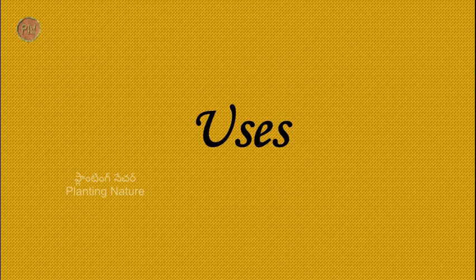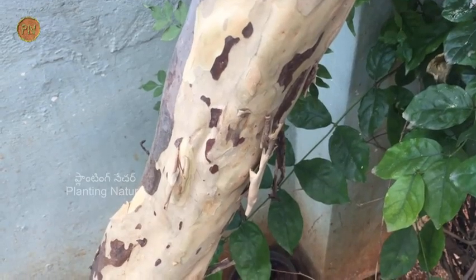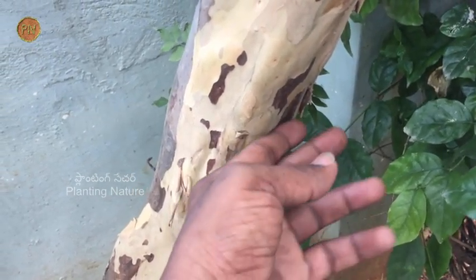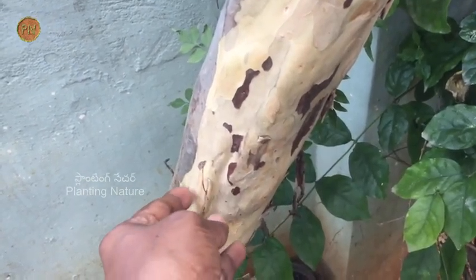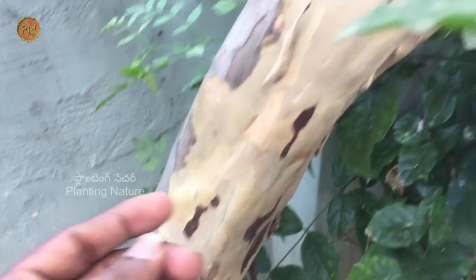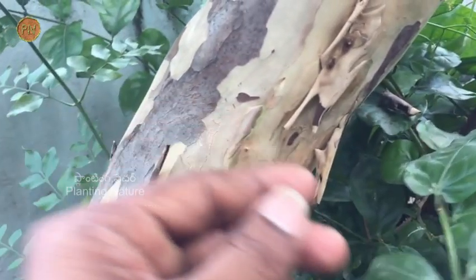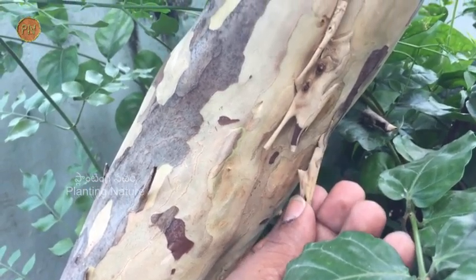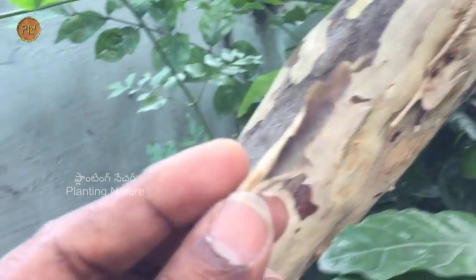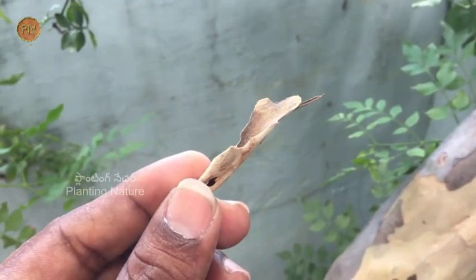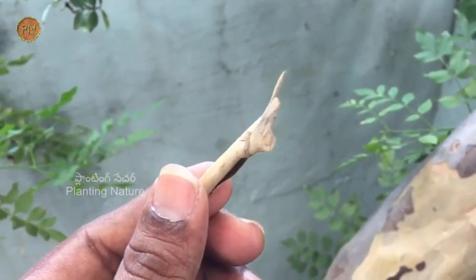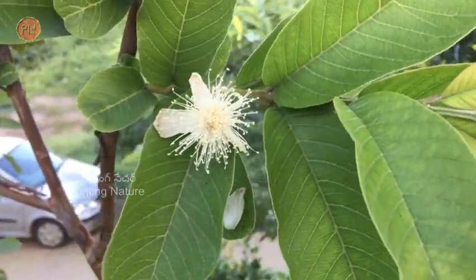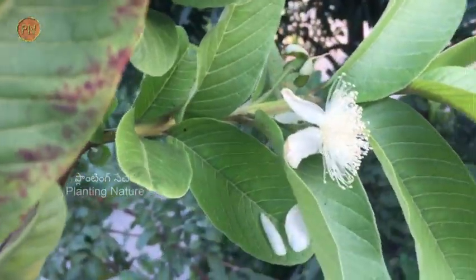Let us now see the uses of individual parts. The wood of this tree is used to prepare architecture and many decorative items. The wood is also used in barbecue to smoke the meat. The bark extracts from this tree have medicinal properties and can treat diarrhoea in children. It has astringent properties and is very good for skin. It is also made as a powder and applied to skin in prevention of acne.